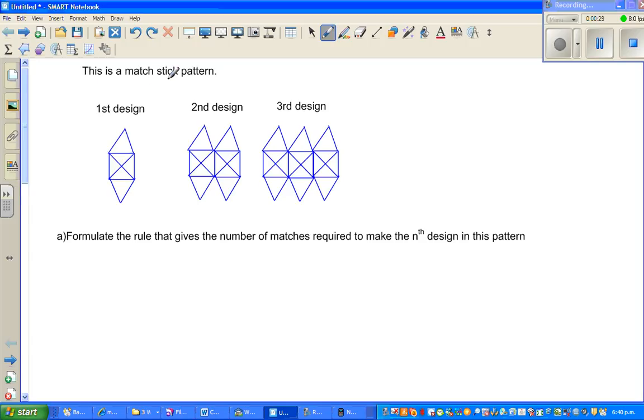This is a matchstick pattern. Each line is a matchstick. This is the first design, the second design, and the third design. Let's count the number of matchsticks. The first has four sides of the square, the diagonals are five, six, seven, eight, nine, ten. The second design has 10, and you should not count this second time because this is a common matchstick. So this is 10.